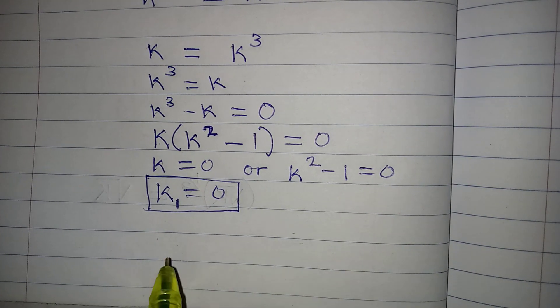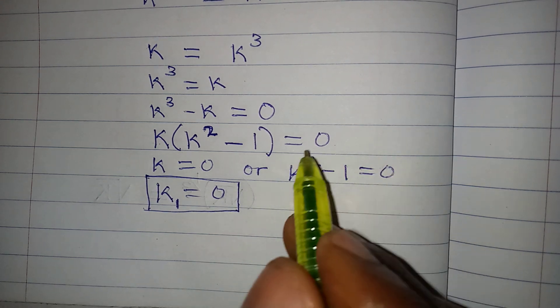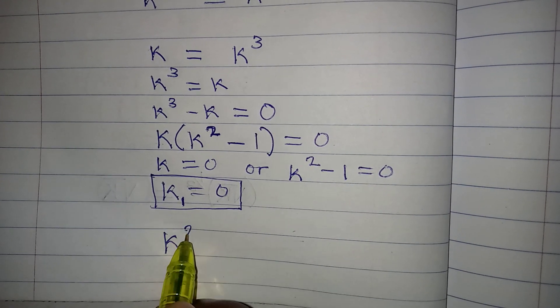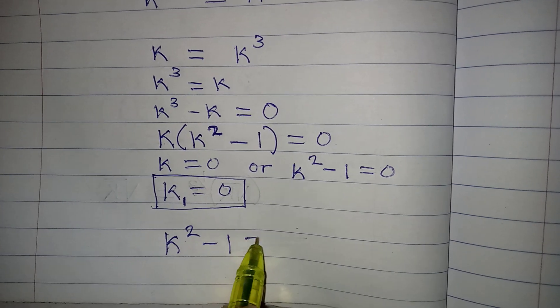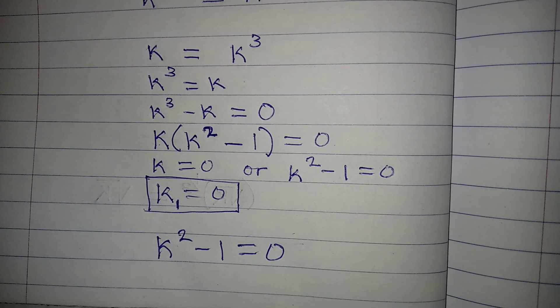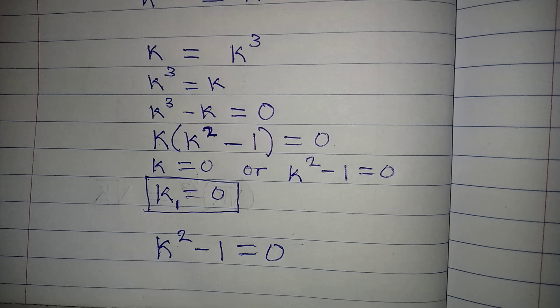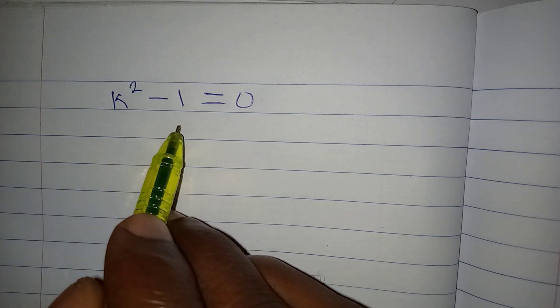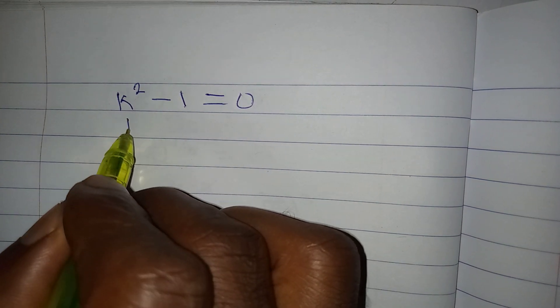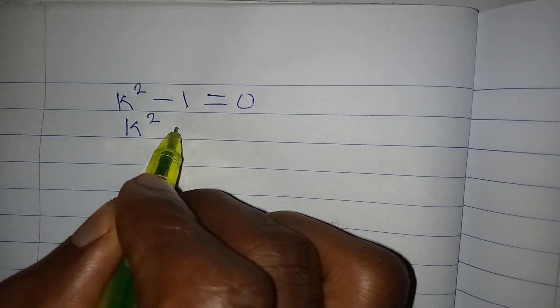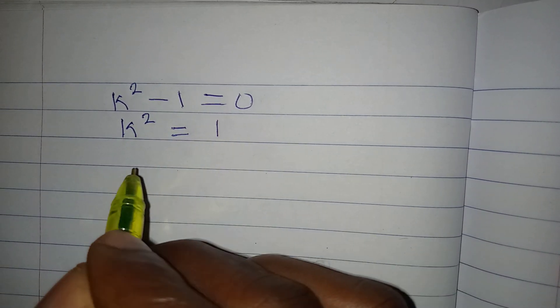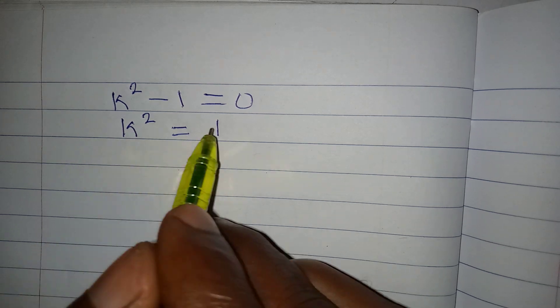We deal with the quadratic equation k squared minus 1 equals zero. This is a quadratic because of the power of 2, so we expect two values from it. From k squared minus 1 equals zero, we get k squared equals 1. Now we take the square root of both sides to eliminate the square.